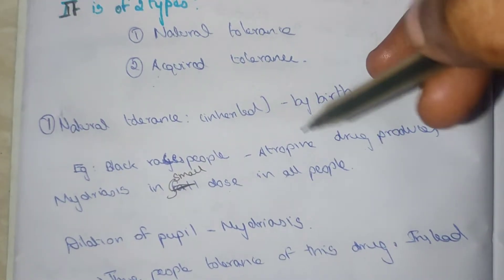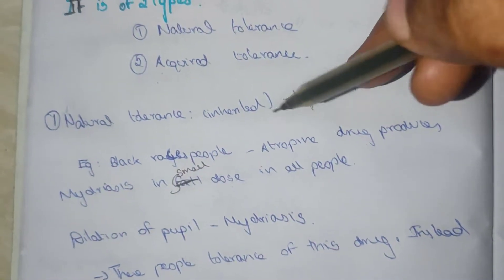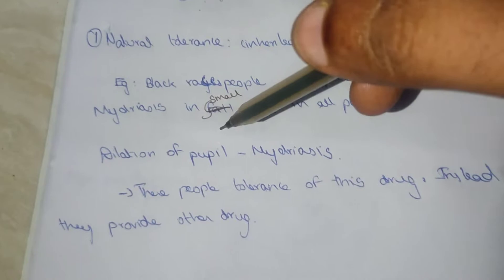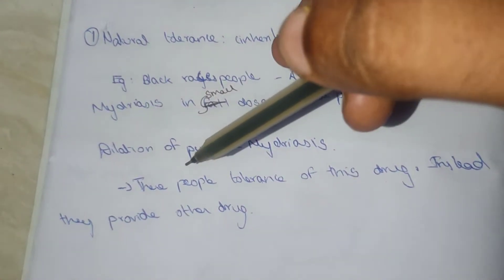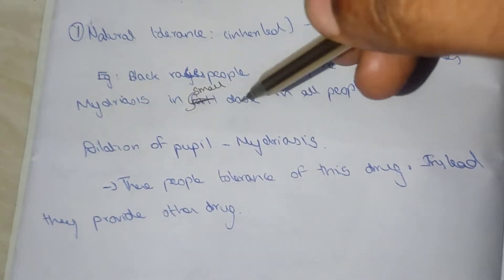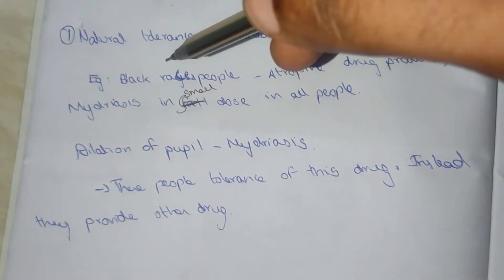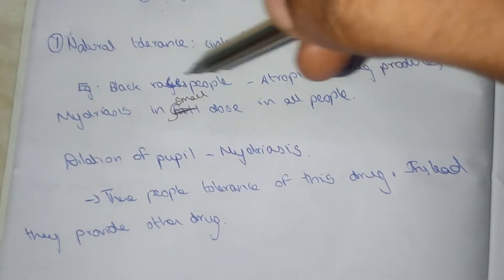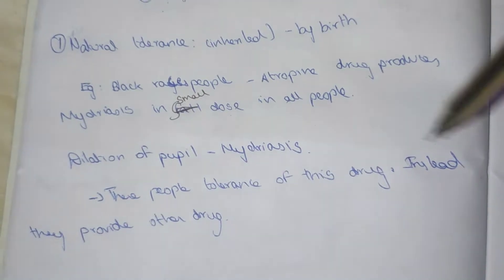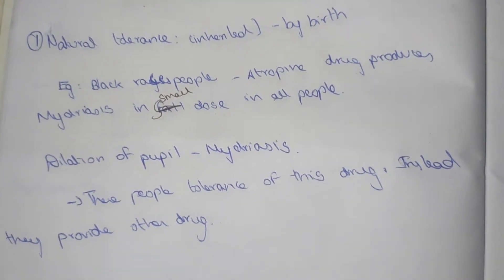Mydriasis means dilatation of the pupil. Atropine produces mydriasis in small doses in all people, but in black race people they show tolerance to this drug. Atropine does not produce mydriasis in black race people, so other drugs are used for them. These people naturally tolerate this drug.